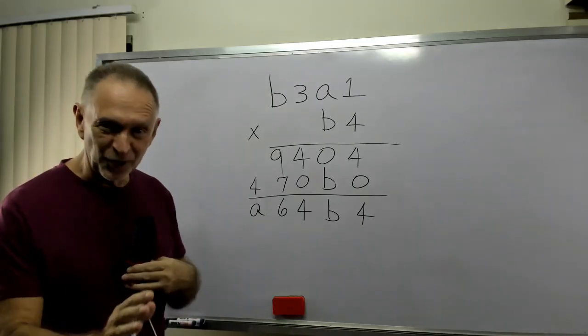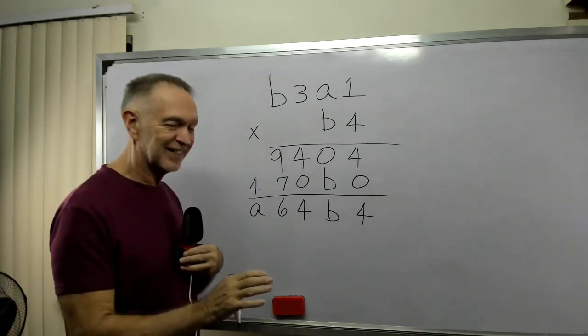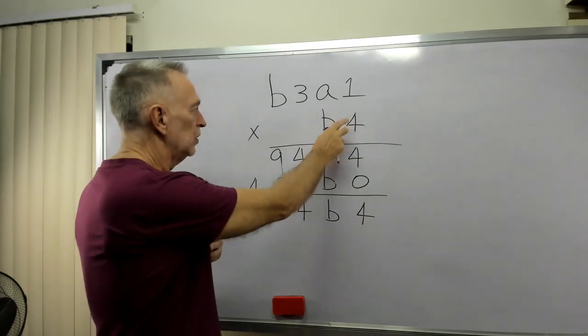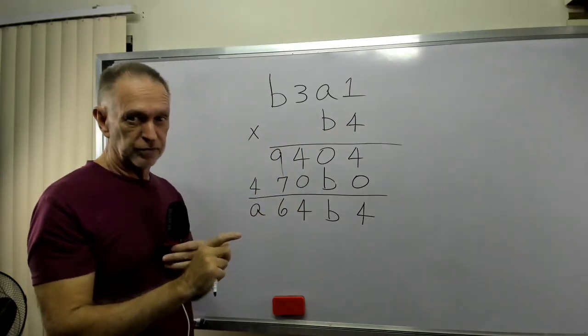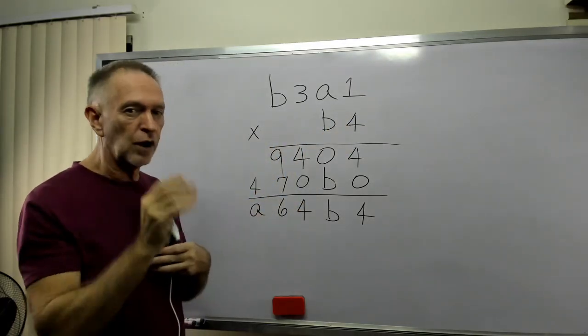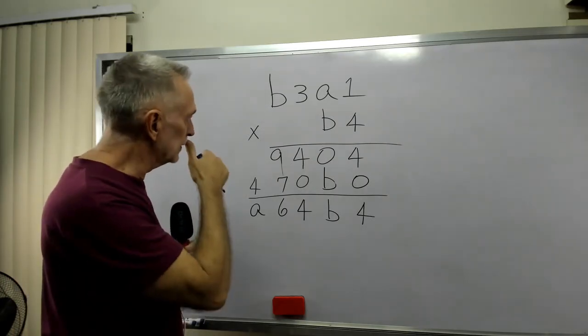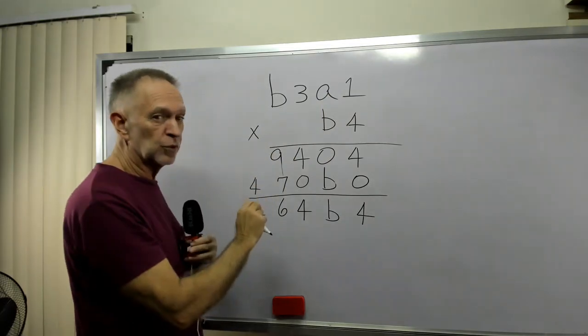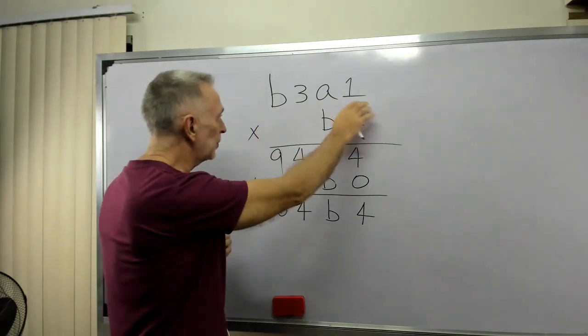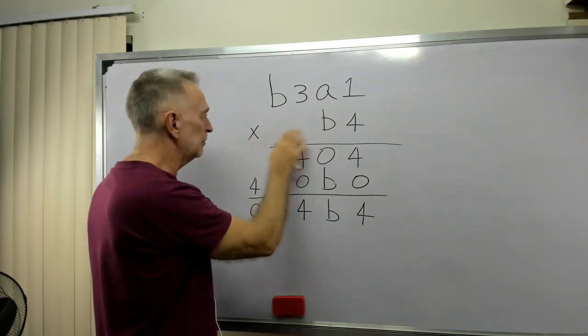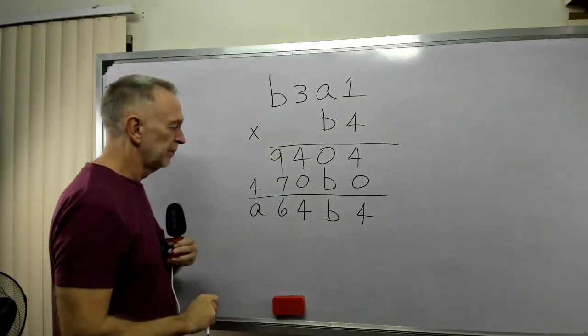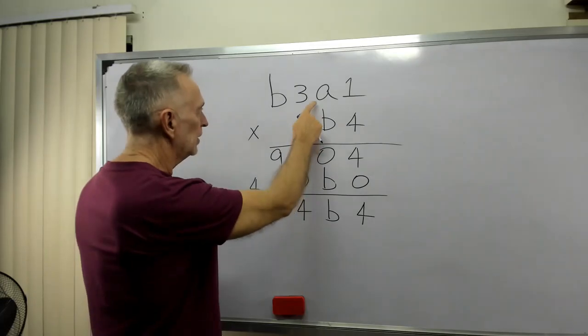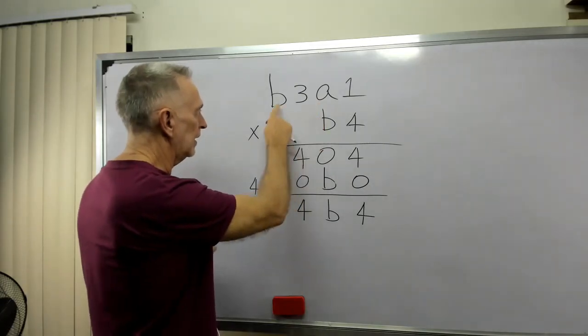Don't let your hair catch on fire, because you guys have learned how to multiply double-digit numbers. So just use that thought process to solve this. We have B3A1, so it's some number B3A1 times B4. And our job with this, our challenge, is to solve for A and B.